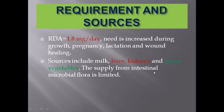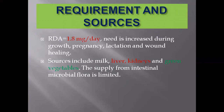The supply of riboflavin from intestinal microbial flora is limited. In our body, the microbial flora does not produce much riboflavin, so dietary sources remain the primary supply.